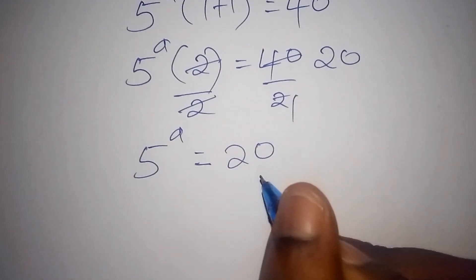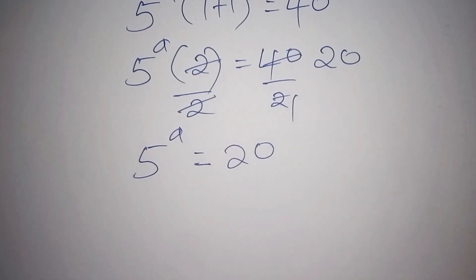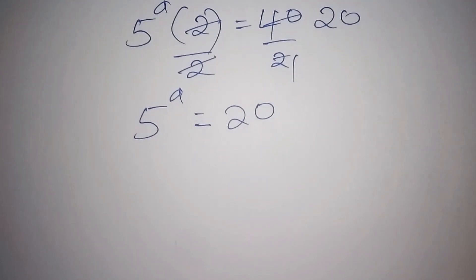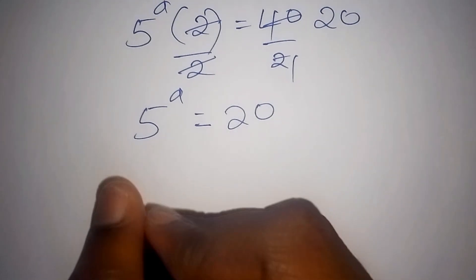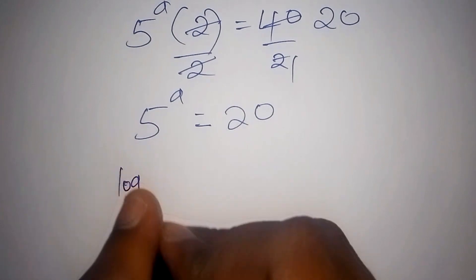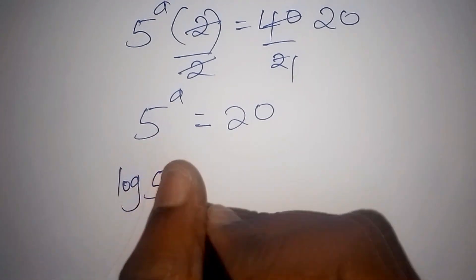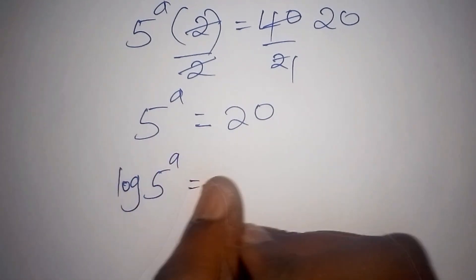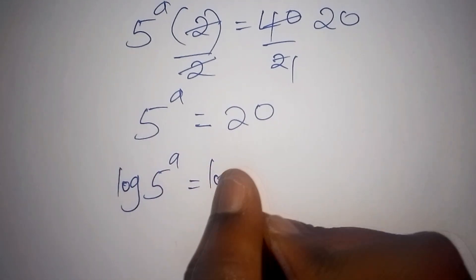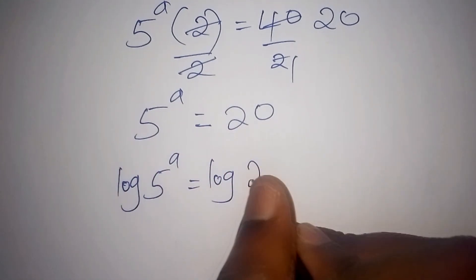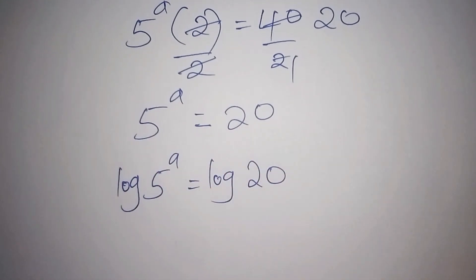Now, how do we work out the value for A? The best thing is to introduce the log on both sides. So we shall have the log of 5 to the power of A is equals to the log of 20.